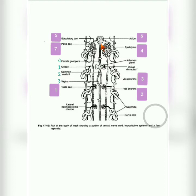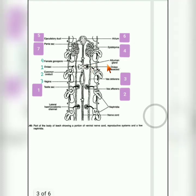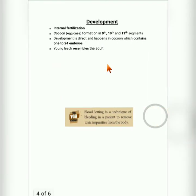The male genital pore opens in the 10th segment. In the female reproductive system found in the 11th segment, a pair of ovaries is present. Oviducts from both ovaries unite to form a common oviduct, which enters the vagina. The female reproductive system opens through the female gonopore, also in the 11th segment.